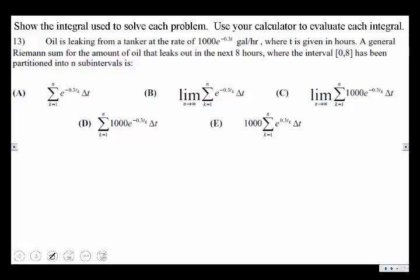Where T is given in hours, the general Riemann sum for the amount of oil that leaks out over the next 8 hours for the interval from 0 to 8 has been partitioned into n sub-intervals, and which one of these match that?